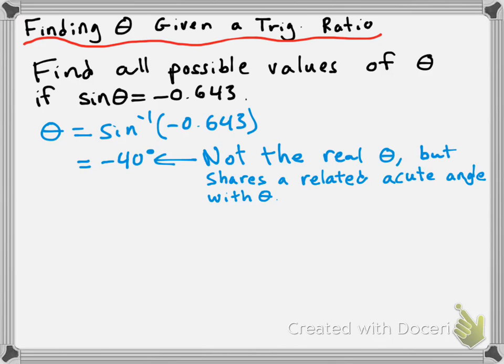So we can use this value to get the related acute angle. So this negative 40 degrees has a related acute angle of 40 degrees. So this would be an angle in quadrant 4, and its related acute angle would be 40 degrees.